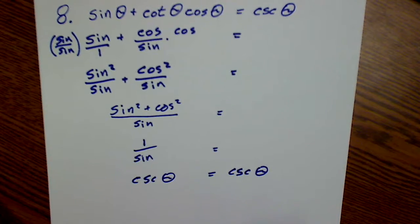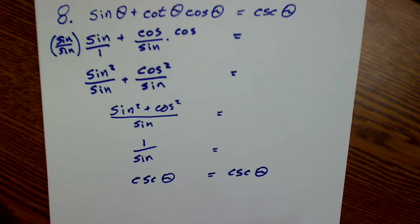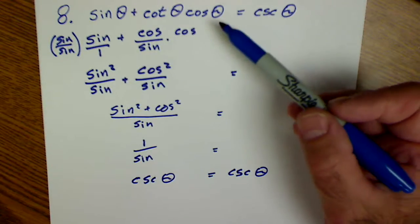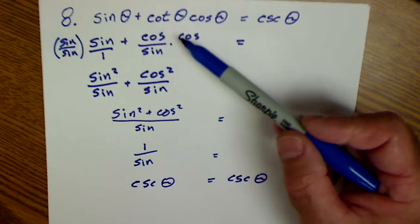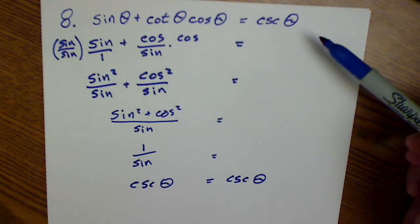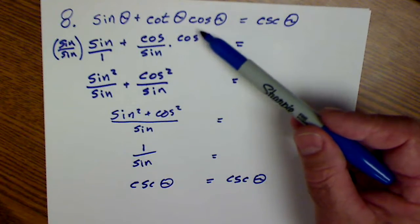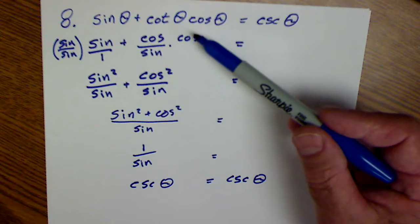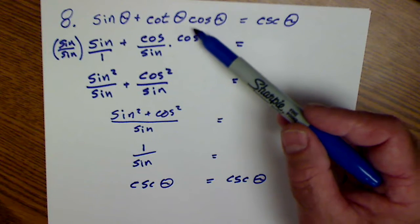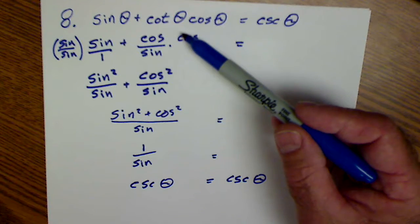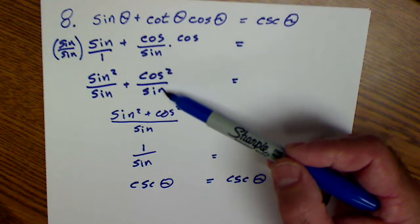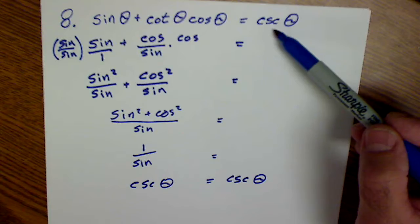So again, first thing I do is decide which side to work on. I always take the more complex side and work to simplify it. The second thing I do is I put in the building blocks of sine and cosine. And then I'm trying to combine terms together to get it into a cosecant.